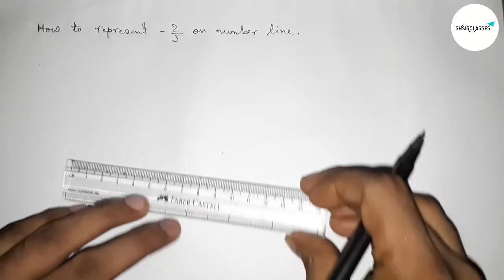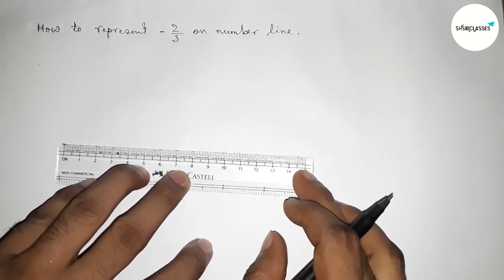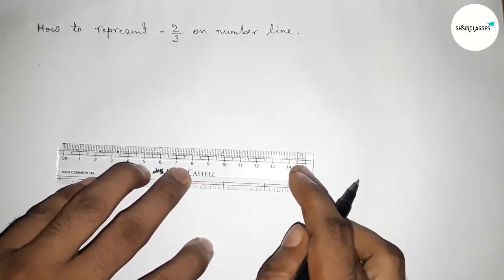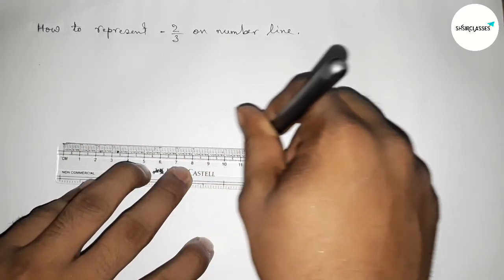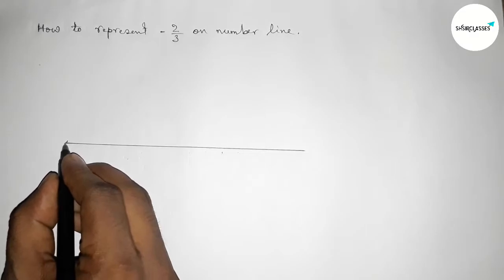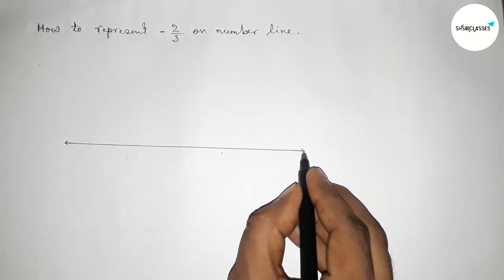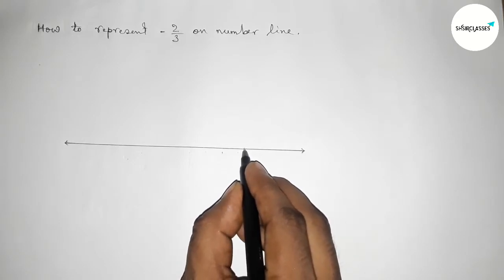First of all, we have to construct a number line. So now here I'm going to draw a line of any length and taking arrow mark on both sides. Next, taking the number 0 here.